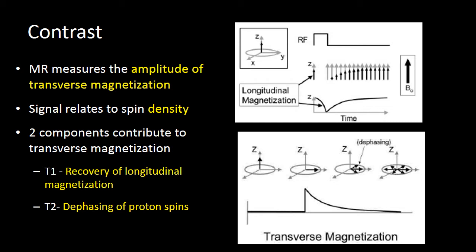This first chart talks about T1 recovery, or recovery of longitudinal magnetization. Initially, protons are spinning in our Z-axis. We create an RF pulse, and that RF pulse transfers energy into the protons, causing them to spin perpendicular to our magnet. This graph shows how much longitudinal magnetization there is. When we first apply an RF pulse, there is no longitudinal magnetization because all the protons are spinning in the transverse plane.